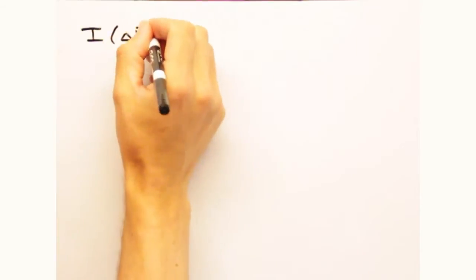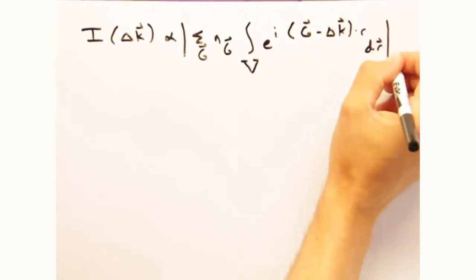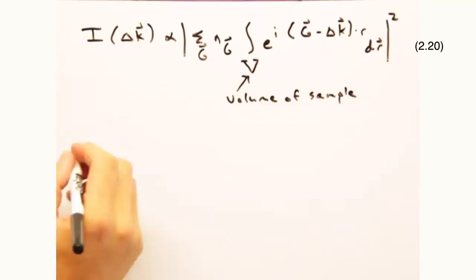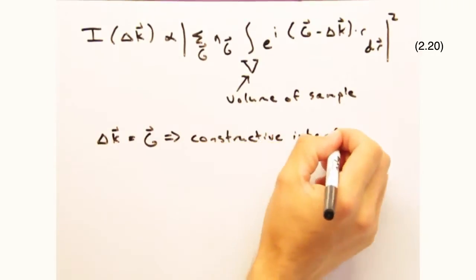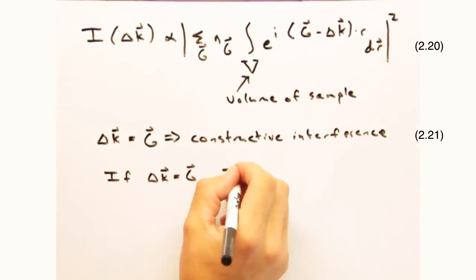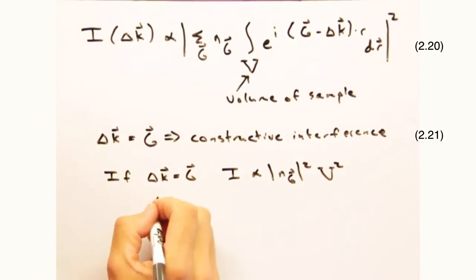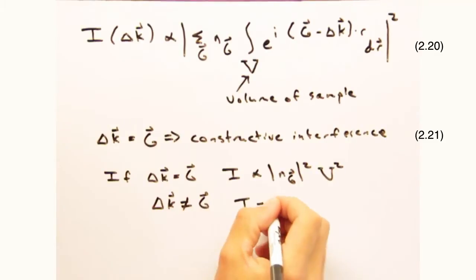As a reminder, we are invoking constructive interference only when delta k is equal to g, otherwise this whole integral drops to zero. When that condition is satisfied, you get an expression that looks like so, where the intensity at a particular hkl is proportional to the absolute value of the Fourier coefficient at that same hkl.